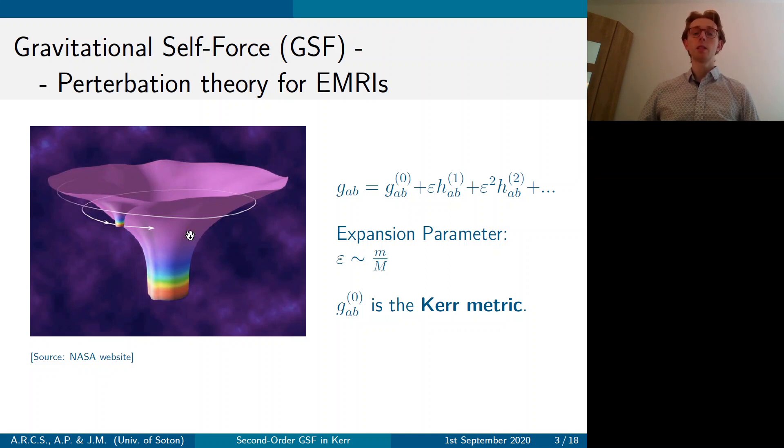So to describe this spacetime, we expand the metric in terms of the small mass ratio epsilon, where the small m is the compact object mass and the capital M is the supermassive black hole mass. So for an EMRI, as supermassive black holes are expected to be spinning, the background metric G0 is taken to be the Kerr metric. And the self-force problem boils down to trying to calculate the metric perturbations H1 and H2.